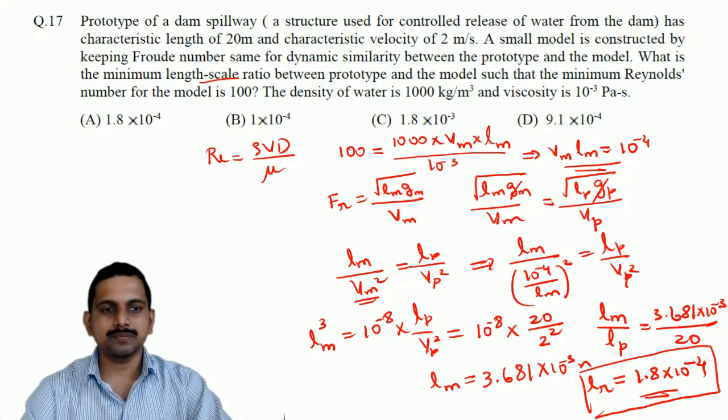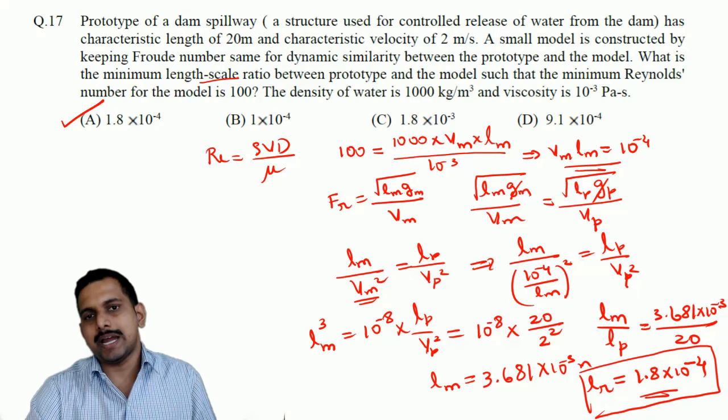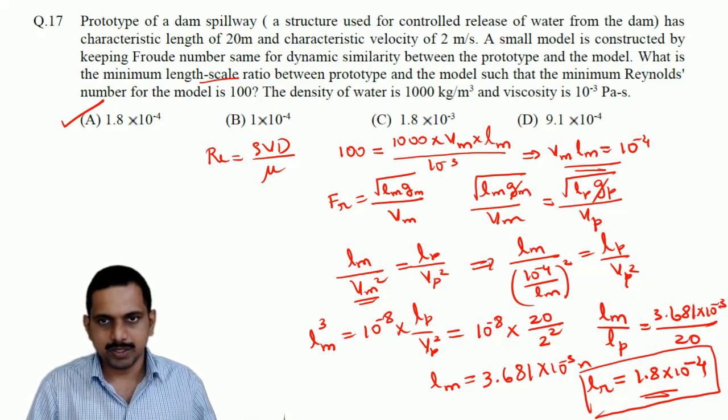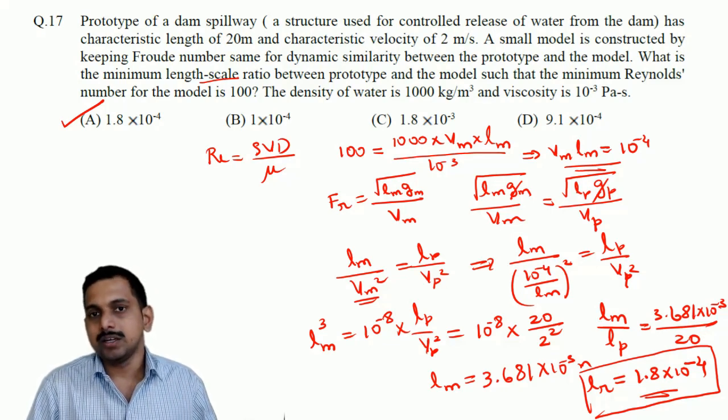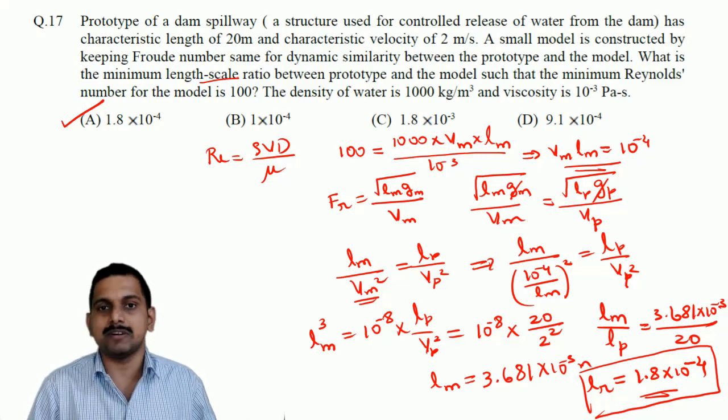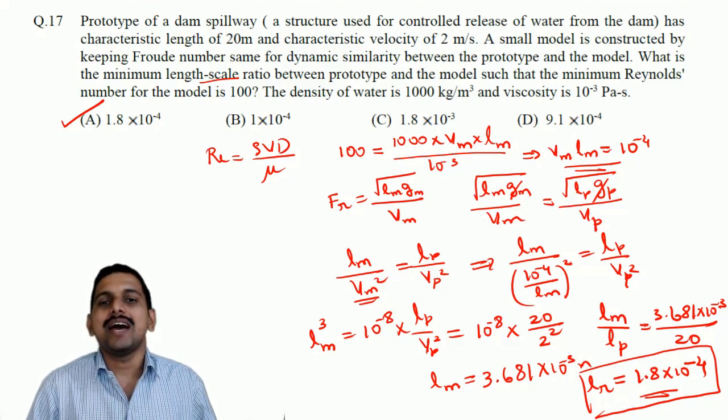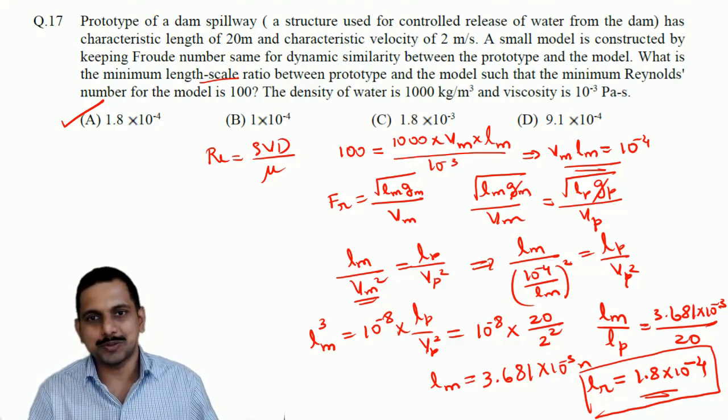I hope you get that students, it is a very easy question. Only thing you have to remember is Reynolds number and Froude's number, what is the relation and then it becomes very easy. I hope you have understood this students, thank you very much. Kindly like my video if you are liking. If you are disliking, tell me the reason why you are disliking so that I could improve. And another point is kindly subscribe my channel. Thank you very much students.